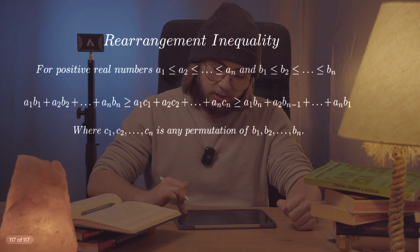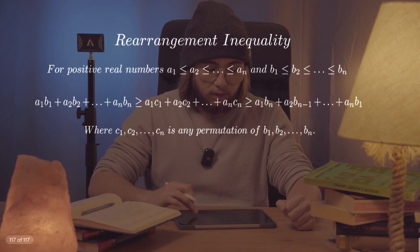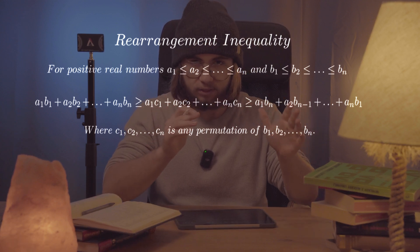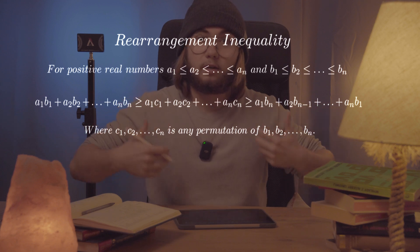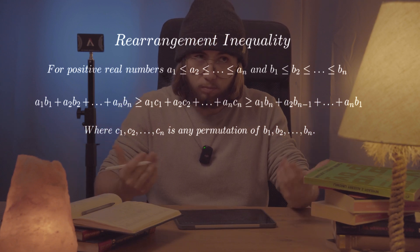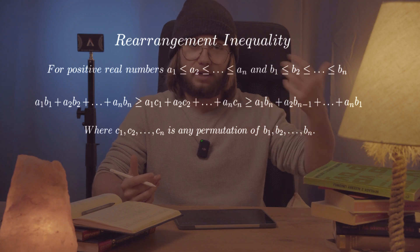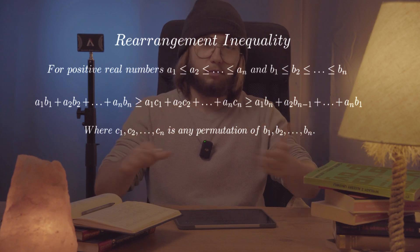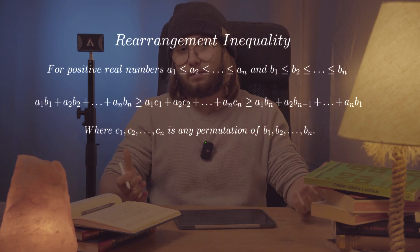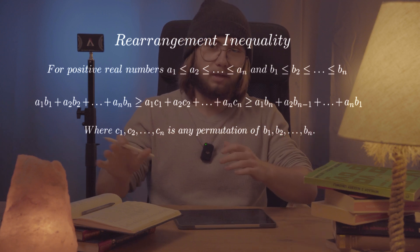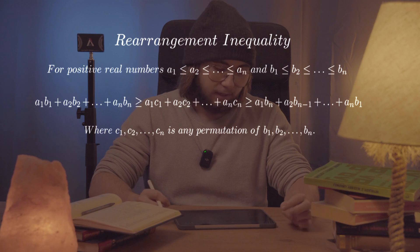So what does the rearrangement inequality even state? The rearrangement inequality states that whenever we have two sequences of positive real numbers — let's say A's and B's — such that our sequences are non-decreasing, which means A₁ ≤ A₂ ≤ A₃ ≤ … ≤ Aₙ, and similarly B₁ ≤ B₂ ≤ B₃ ≤ … ≤ Bₙ.